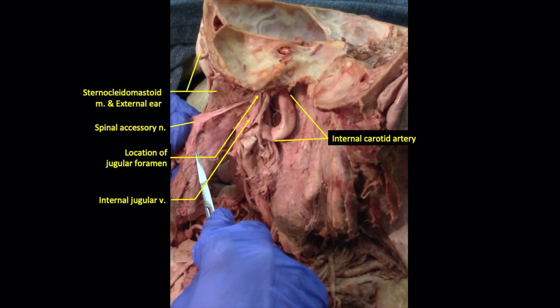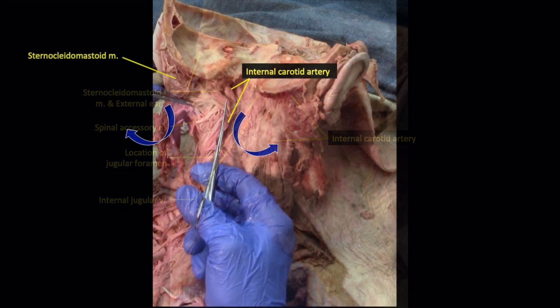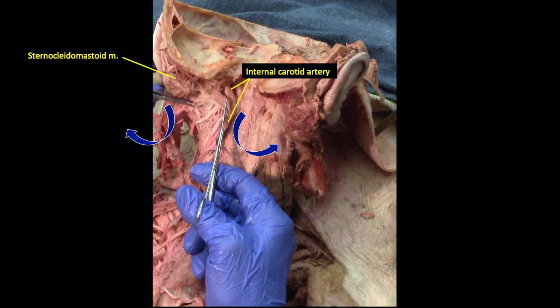We now only have one last cranial nerve to identify in the region. We look for it by moving the internal carotid artery more medially and the sternocleidomastoid muscle laterally, to identify the hypoglossal nerve, cranial nerve 12, on its way to the hypoglossal foramen. We have now identified the relevant structures we should find in the retropharyngeal space.